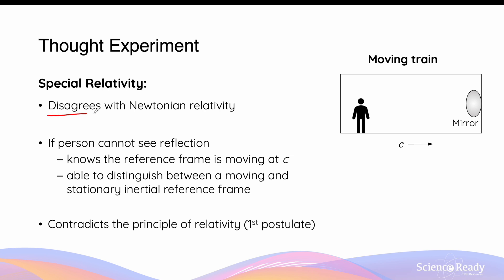However, the theory of special relativity disagrees with what's predicted by Newtonian relativity. It argues that if the person cannot see the reflection, he or she will be able to know that the reference frame is moving at the speed of light or greater. Because if the velocity of the train is moving at any speed less than c, light travelling from the person to the mirror will eventually catch up to the mirror and be reflected, so the person will be able to see the reflection. The only scenario in which the person will not be able to see the reflection is if the train is travelling at the speed of light or faster. As a result, if the person cannot see the reflection, he or she will be able to distinguish between a moving and a stationary inertial reference frame. This violates the first postulate of special relativity, which states that all inertial frames of reference are equivalent and observations made in them should be identical.